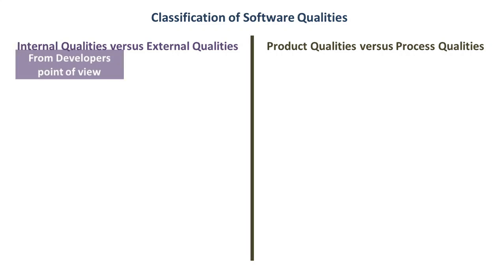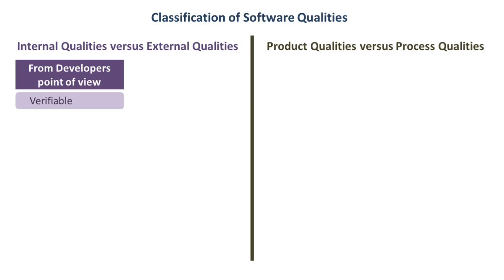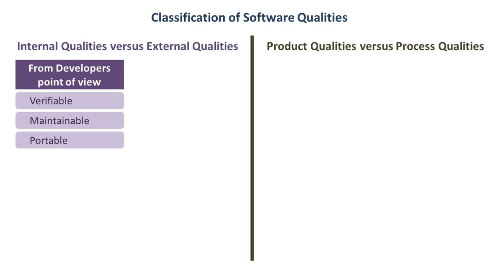The producer of the software wants it to be verifiable — it means defects in the coding of the software should be easily verified. The software should also be maintainable, meaning the software system should be correctable for faults or adaptable to a changed environment. Portable means the software should be able to run on different computers with different operating systems without making any changes or few modifications.